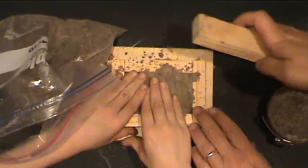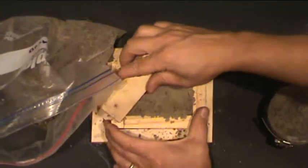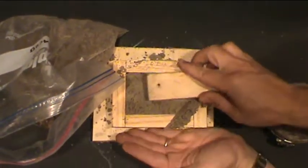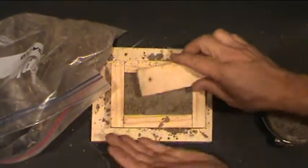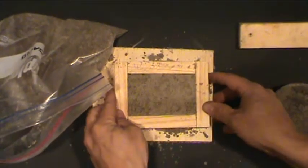Once the sand is up above the top of the flask, you want to take a straight edge and strike the flask. You want it to be nice and level, so when you flip it over, it'll be resting on the sand.